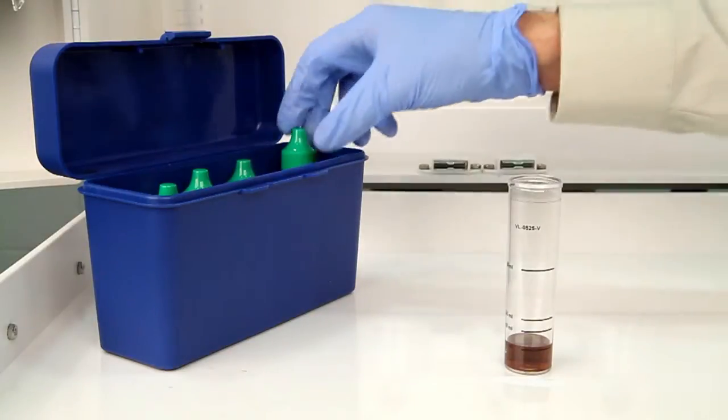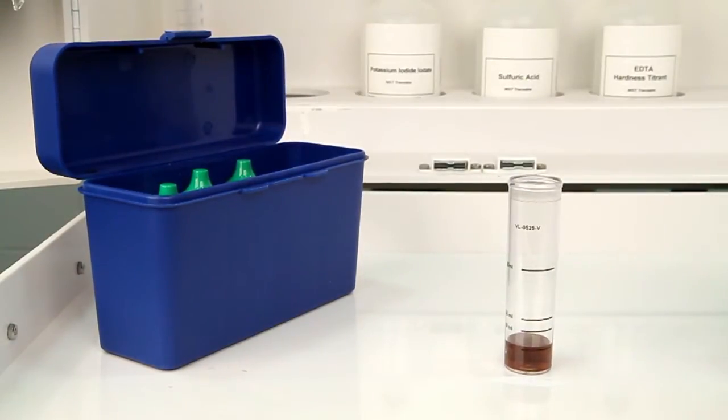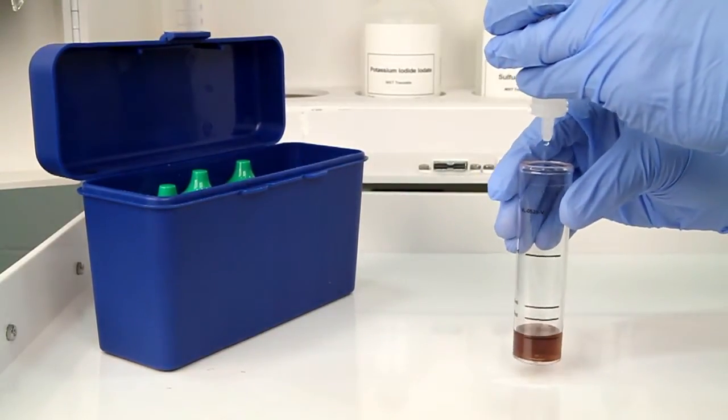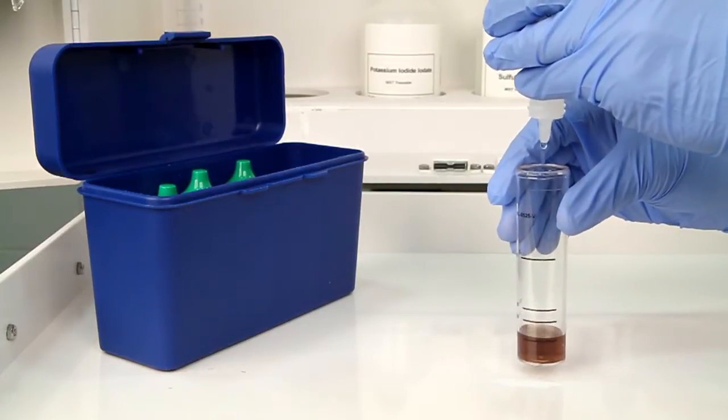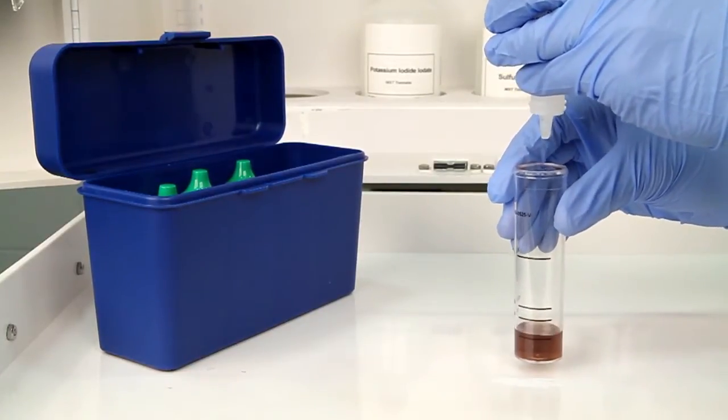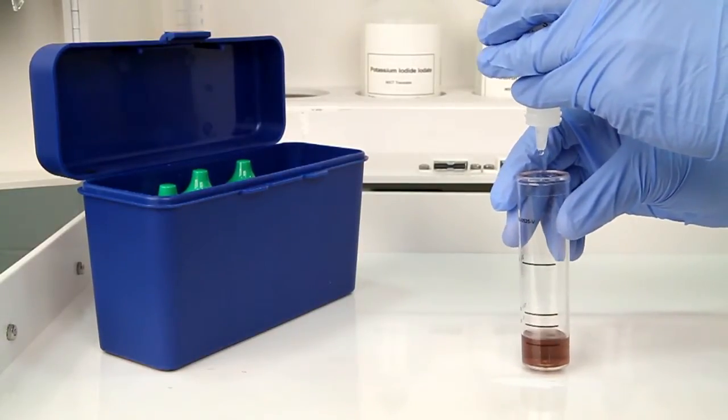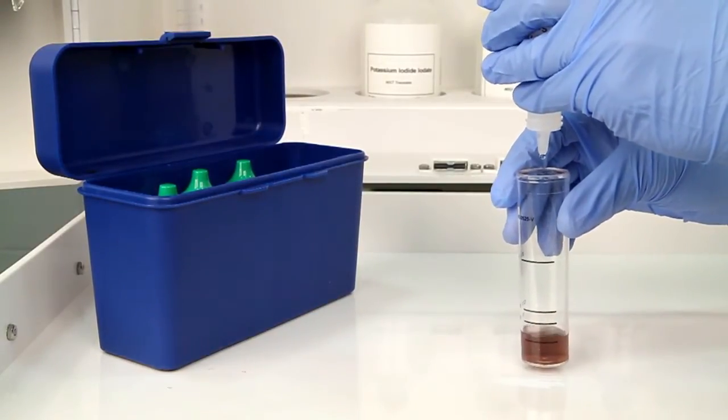The next step is to perform the titration using sodium thiosulfate titrant high. Each bottle of titrant is labeled with the equivalency and sample size it was manufactured for. It's important to make sure you have the proper titrant and the proper sample size for this titration. The bottle contains a dropper tip, so it's important to hold the bottle vertically to get a consistent drop size.